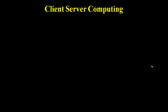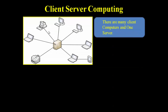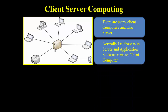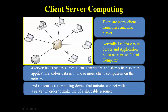Now the next one is the client-server computing model. In a client-server computing model we have one server and more than one client. Normally the database is available on the server and our application software runs on the client machine. Whenever any resource or data is required, your client will send a request to the server, and the server shares its resources, applications, and data with one or more client computers on the network. The client is a computing device that initiates contact with the server in order to make use of shareable resources.